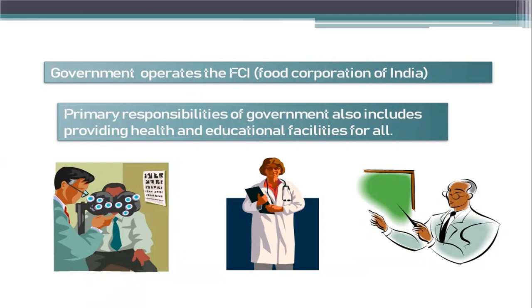There are a large number of activities which are primarily the responsibility of the government. The government must spend on providing health and education facilities for all. Running proper schools and providing quality education — particularly elementary education — is the duty of the government. India's size of illiterate population is one of the largest in the world, and to create good human capital we must provide good education so that this population becomes an asset rather than a liability to the country.